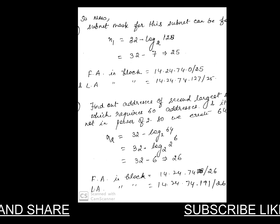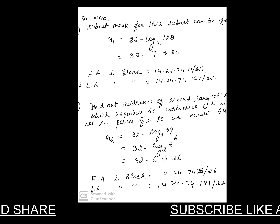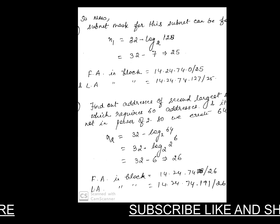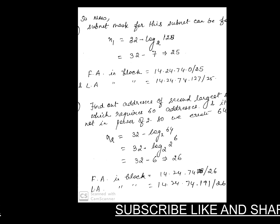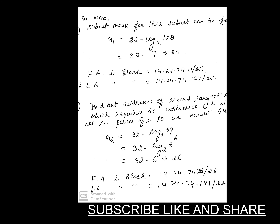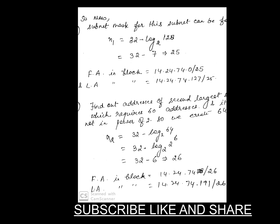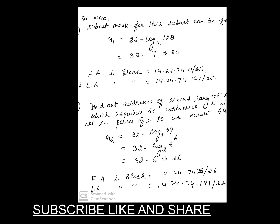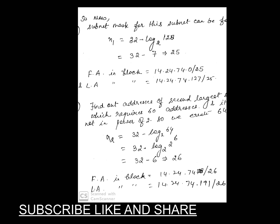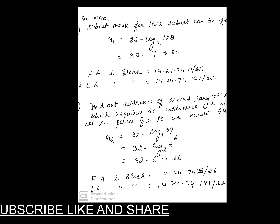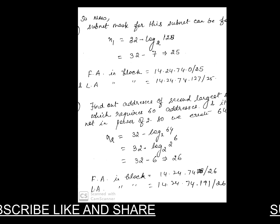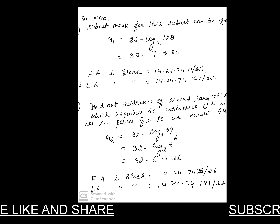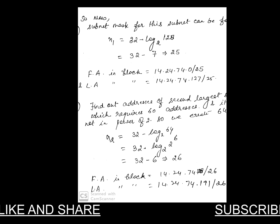We find the first and last address of this /25 block. The first address is 14.24.74.0 and the last address is 14.24.74.127, because we have 128 sub-blocks, going from 0 to 127, with the slash-n notation /25.